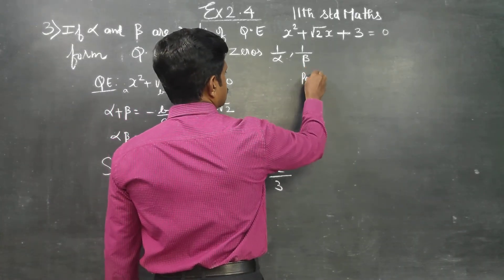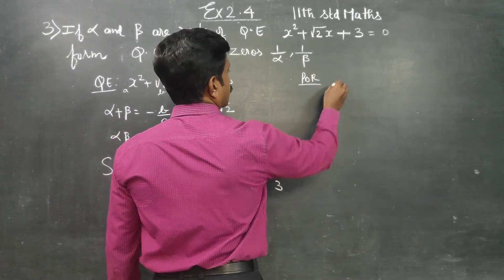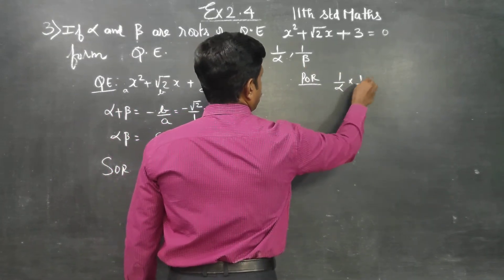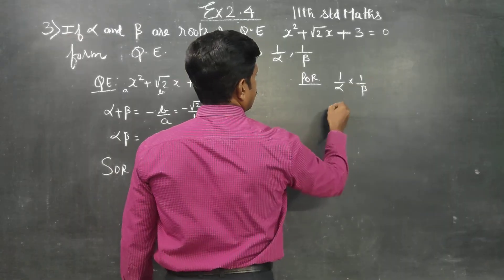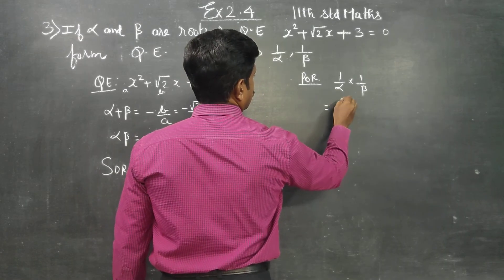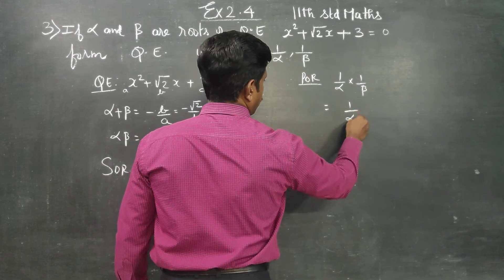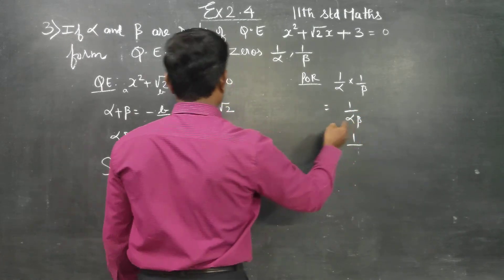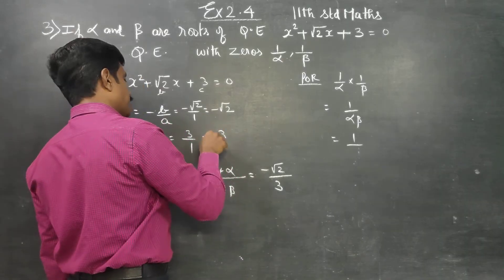Then, the product of the new roots: 1 by alpha into 1 by beta is equal to 1 by alpha beta. Since alpha beta equals 3, the product of the new roots is 1 by 3.